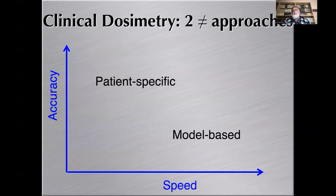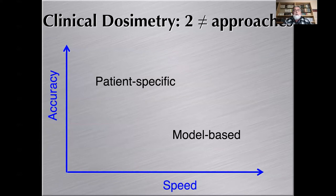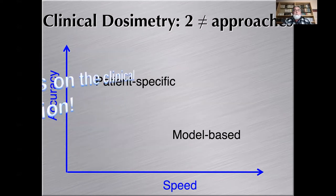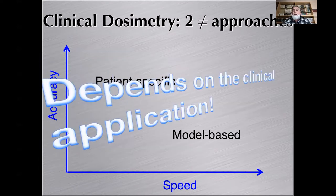As a summary: there are two broad approaches to clinical dosimetry — patient-specific and model-based — and several software tools available. Olinda and IDAC-Dose provide model-based dosimetry. Vendor-specific software such as PlanetDose, MIM, or Hermes allow patient-specific dosimetry. Open-source codes like OpenDOS 3D also support patient-specific dosimetry. The selection depends on the clinical application, and the clinical endpoint will condition the clinical dosimetry approach to implement.